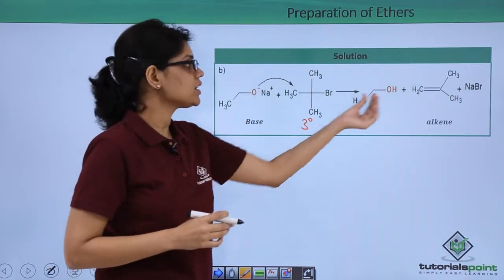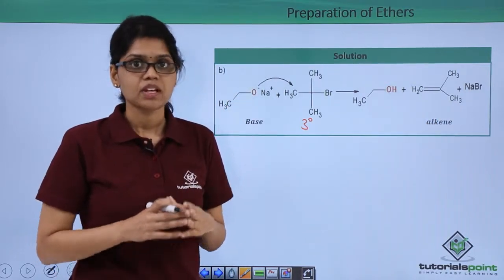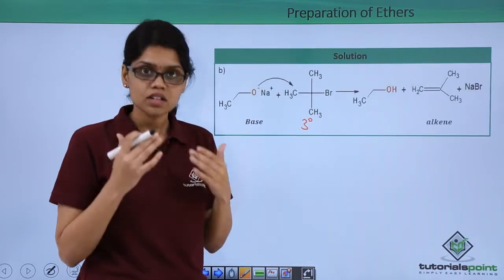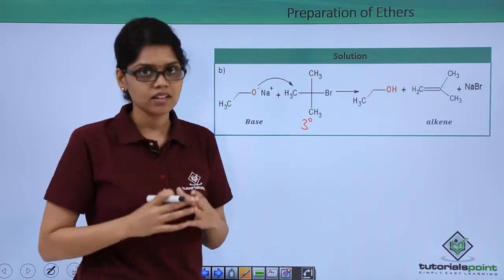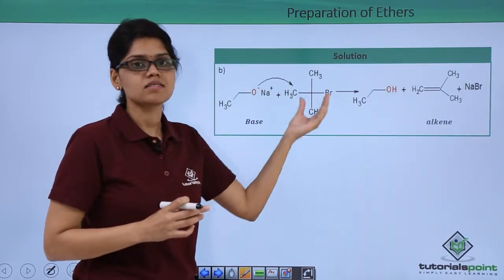This is mainly because the substrate or the alkyl halide is tertiary and is highly sterically hindered for the ethoxide ion to attack the C-Br bond and result in substitution.